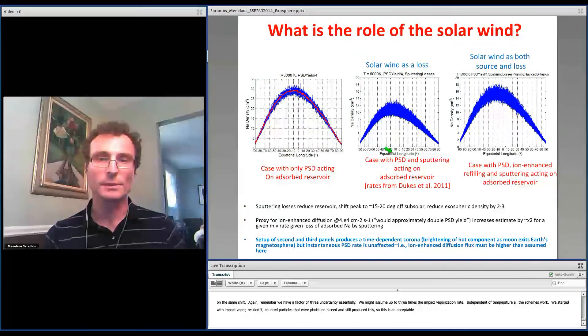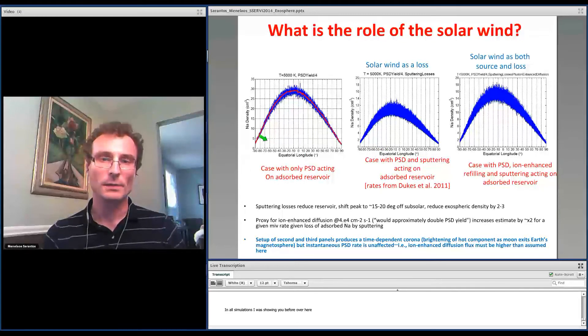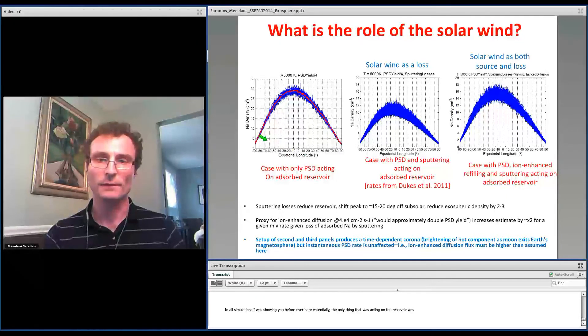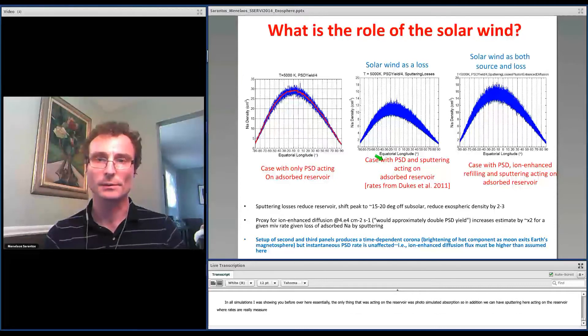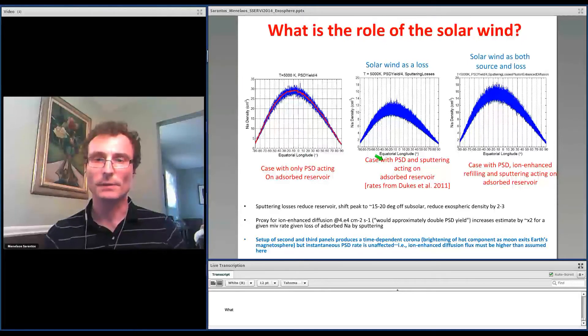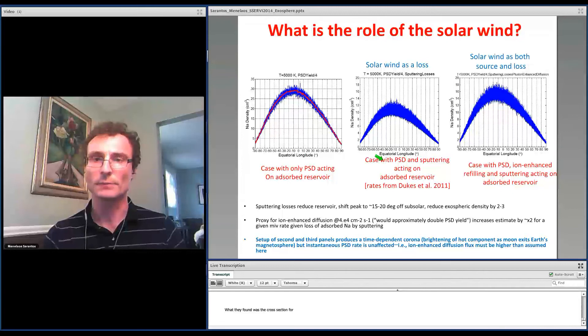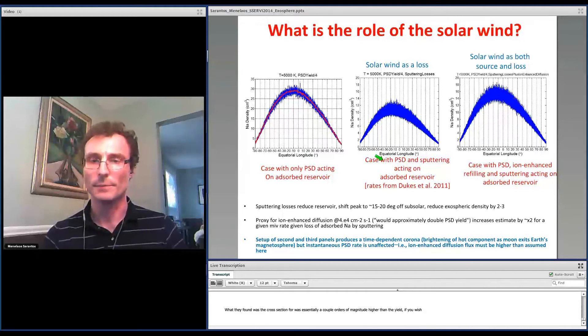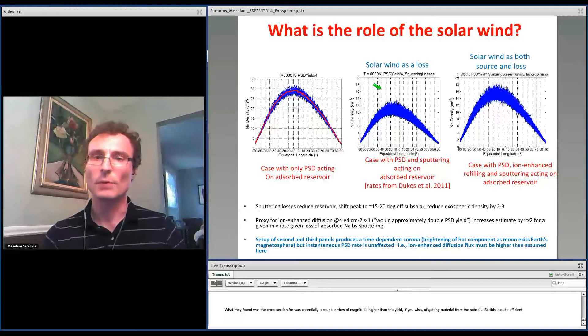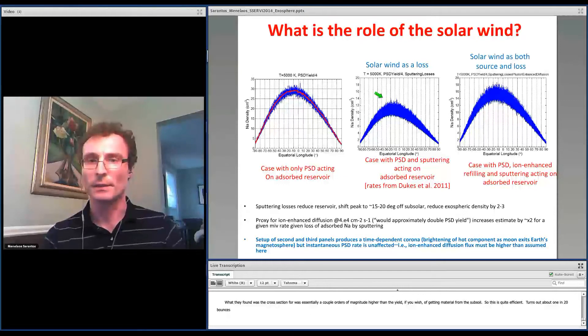Now, what is the role of the solar wind? In all the simulations I was showing you before, the only thing that was acting on the adsorbed reservoir was photo-stimulated desorption. So in addition, we can have sputtering here acting on the adsorbed reservoir with rates or really cross-sections measured by Dukes et al. on some sodium minerals. And what they found was that the cross-section for sputtering of adsorbed particles is essentially a couple orders of magnitude higher than the yield of getting material from the subsoil with sputtering.